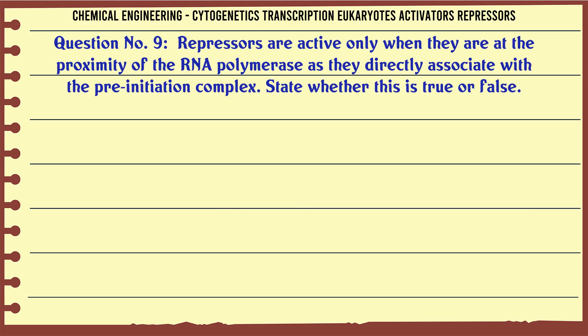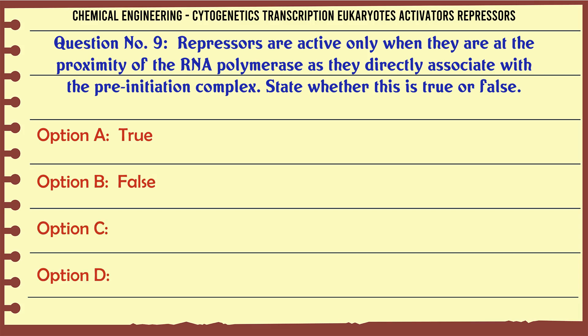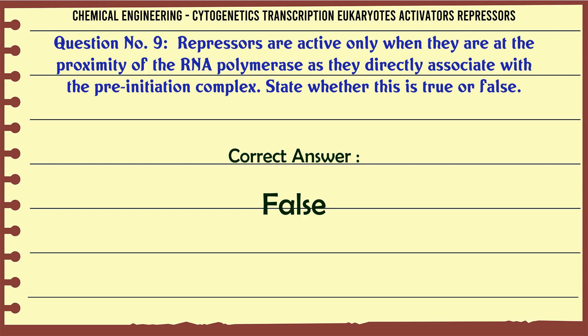Repressors are active only when they are at the proximity of the RNA polymerase as they directly associate with the pre-initiation complex. State whether this is true or false. A. True. B. False. The correct answer is False.